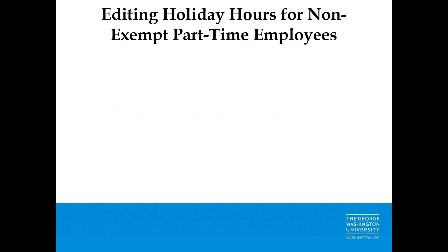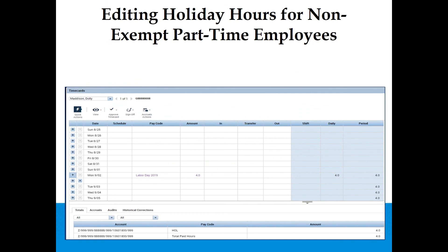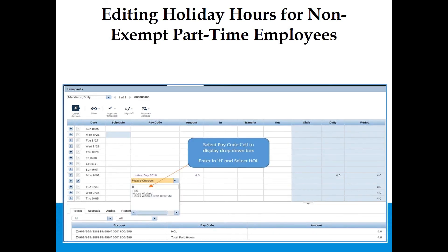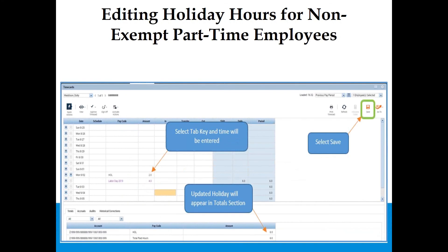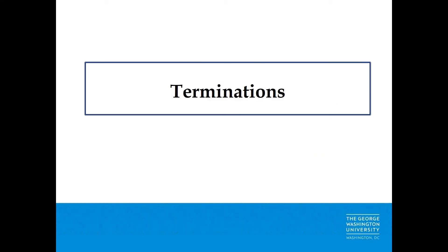Editing Holiday Hours for Non-Exempt Part-Time Employees: Click the plus sign to insert an additional row. Select the pay code cell to display the drop-down box, enter H, and you will see Holiday (HOL). Select the HOL pay code. Select the amount you need to enter — for example, enter 2 to add an additional 2 hours to the default floor. Press the Tab key and the time will be entered. The updated holiday total will appear in the Totals section — for example, instead of 4 hours it will now show 6. Select Save.